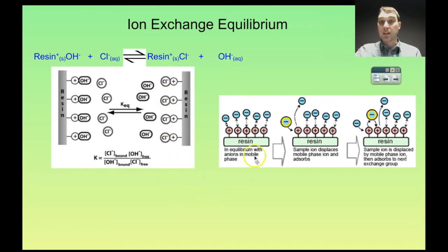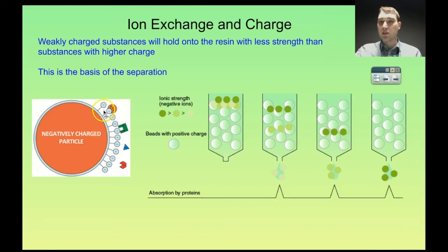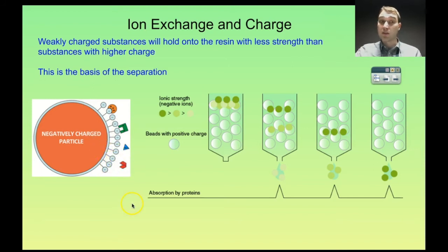That equilibrium applies to all ion exchange situations — there's an equilibrium between what's in the solution and what's attached to the resin. The level of charge the substance has determines how strongly it holds onto the resin. A substance with a weak charge won't hold on as strongly as something with a strong charge. For example, an ion with a 3+ charge sticks very strongly, one with 2+ sticks less so, a neutral polar molecule has some attraction through its positive end, and a negatively charged particle is repelled by the negative resin through electrostatic repulsion.